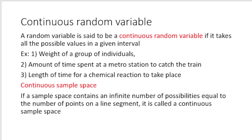For example, you are in a class and the minimum weight of a student is 45 kg and the maximum weight is 80 kg. When we talk about continuous random variable, we think that there is no gap — weight can take any value in that range.